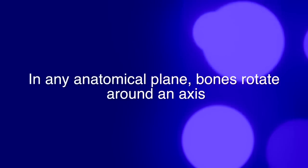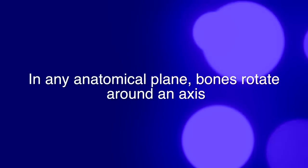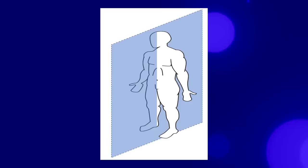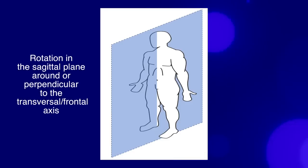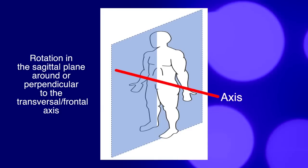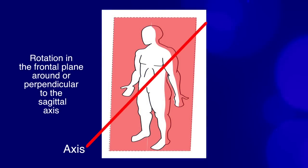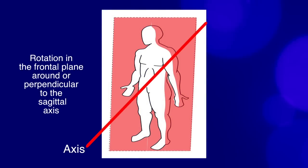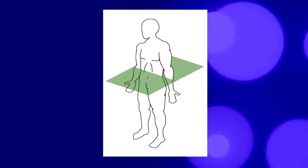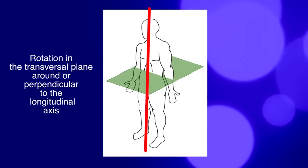When a movement takes place in a plane, bones rotate around an axis of rotation. For example, to describe a movement in a sagittal plane we are seeing a rotation around — or perpendicular to — the transversal, also called frontal axis. When we see a movement in the frontal plane we are describing a rotation around the sagittal axis. And lastly, in the transversal or horizontal plane we describe a movement around the longitudinal axis.